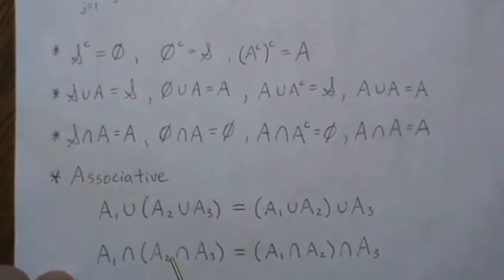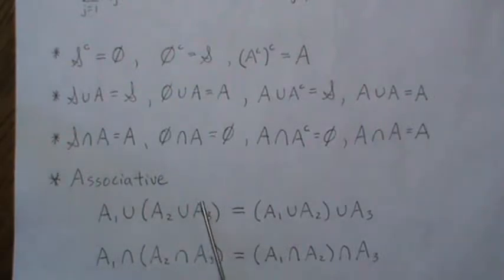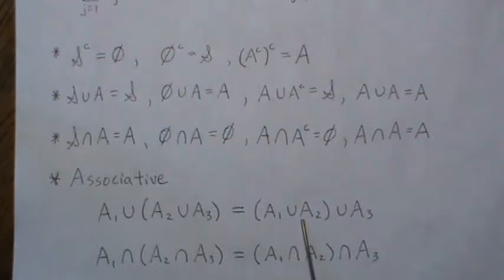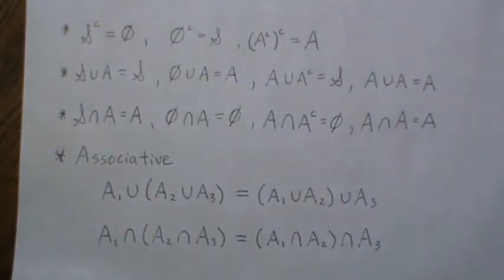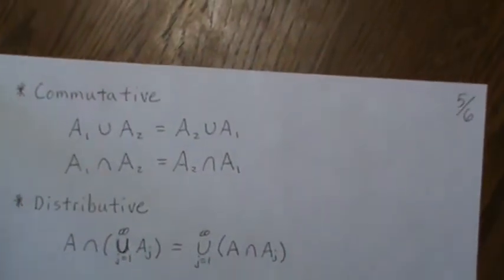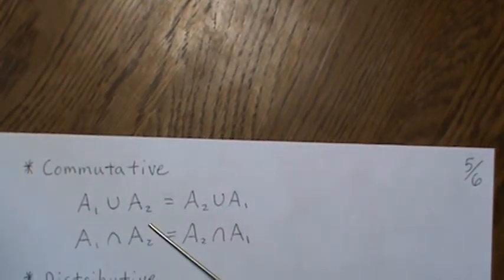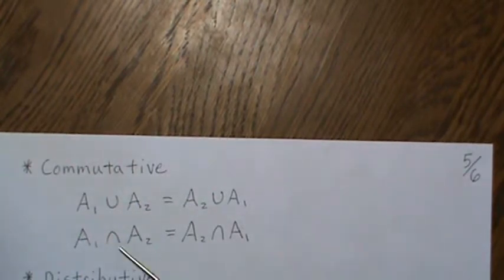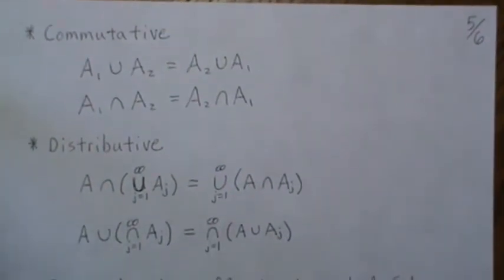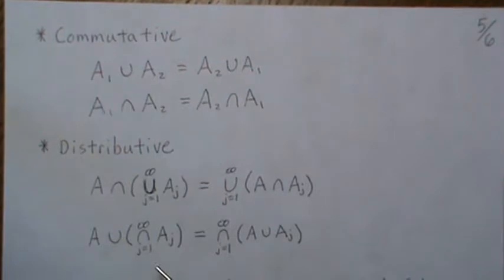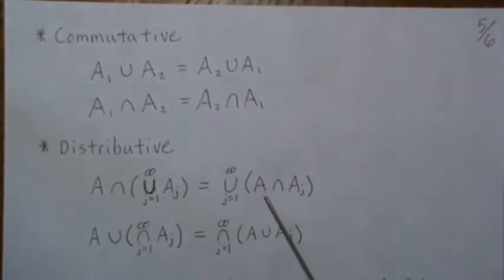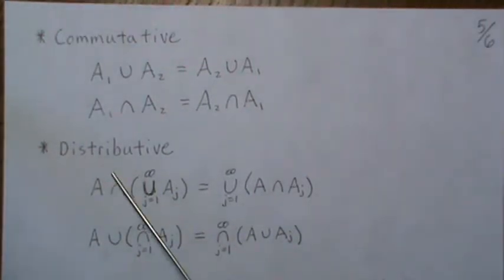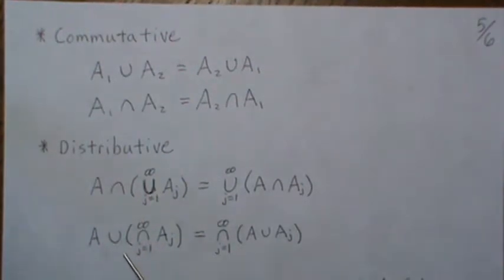The union and intersection are associative, so it doesn't matter which way you group them — you could take the union of two sets and then union with A, or union A with the result the other way. The same holds for intersection; it's associative. They're also commutative: A1 union A2 equals A2 union A1, and intersection is also commutative. The distributive property: a bunch of unions intersected with a set A equals A intersected with each A_j and then taking the union. Intersection is distributive over union, and union is distributive over intersection.